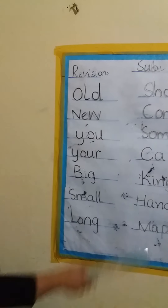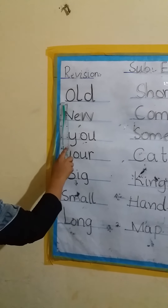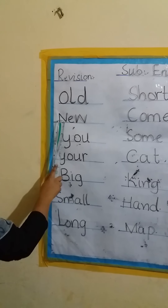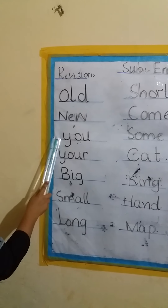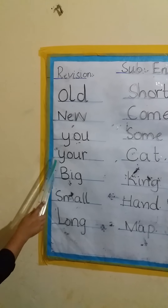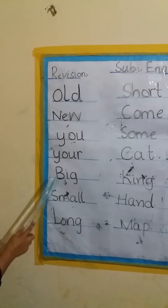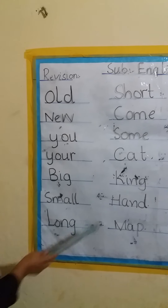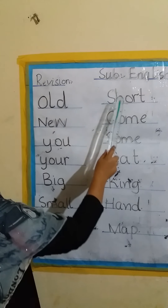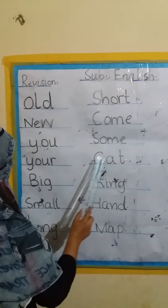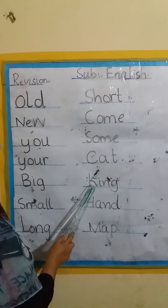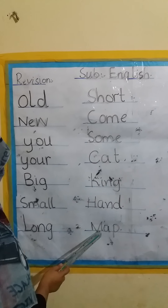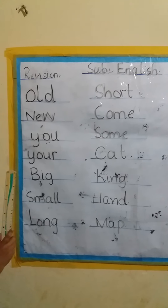Now once again: old, new. You, your. Big, small. Long, short. Come, some. Cat. King, hand. Map.